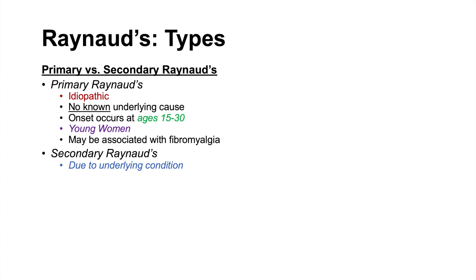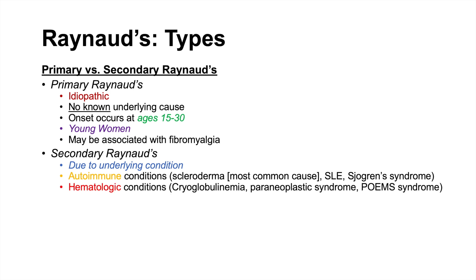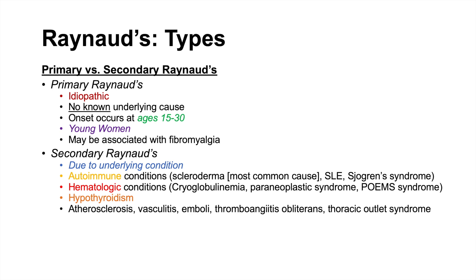Many conditions can cause secondary Raynaud's. One of the biggest categories is autoimmune conditions. Scleroderma is actually the most common cause of secondary Raynaud's. SLE or lupus and Sjögren's syndrome are also causes. Hematologic conditions can as well, including cryoglobulinemia, paraneoplastic syndromes, and POEMS syndrome. Hypothyroidism can cause secondary Raynaud's. Other vascular diseases include atherosclerosis, vasculitis, emboli, thromboangiitis obliterans, and thoracic outlet syndrome. Carpal tunnel and other neurologic conditions expressed in the hand can also lead to abnormal vasoconstriction responses.